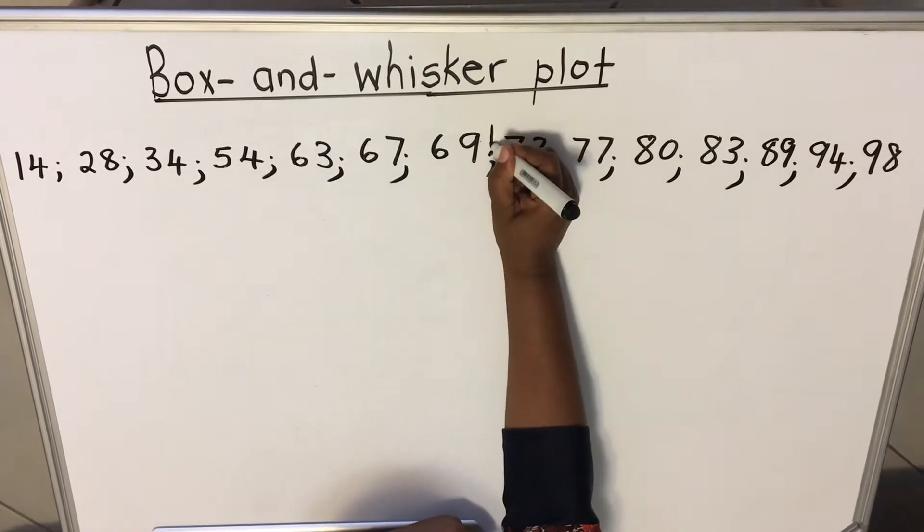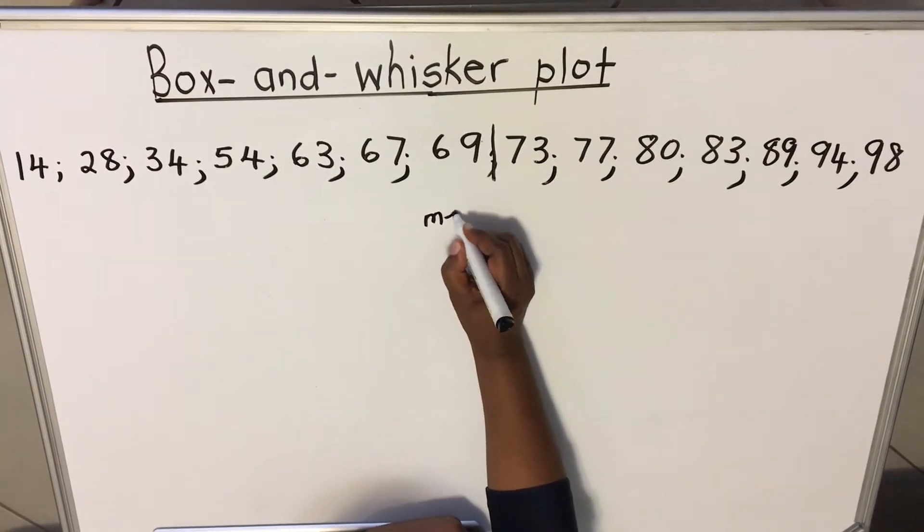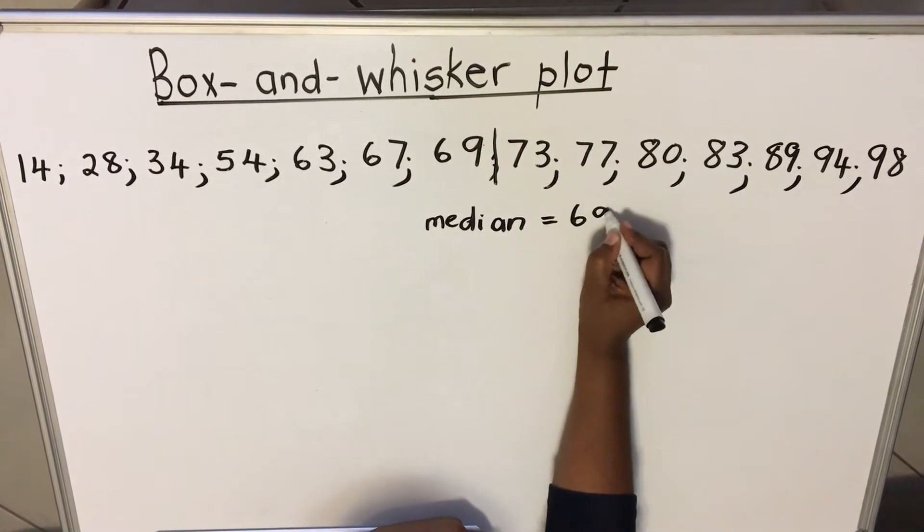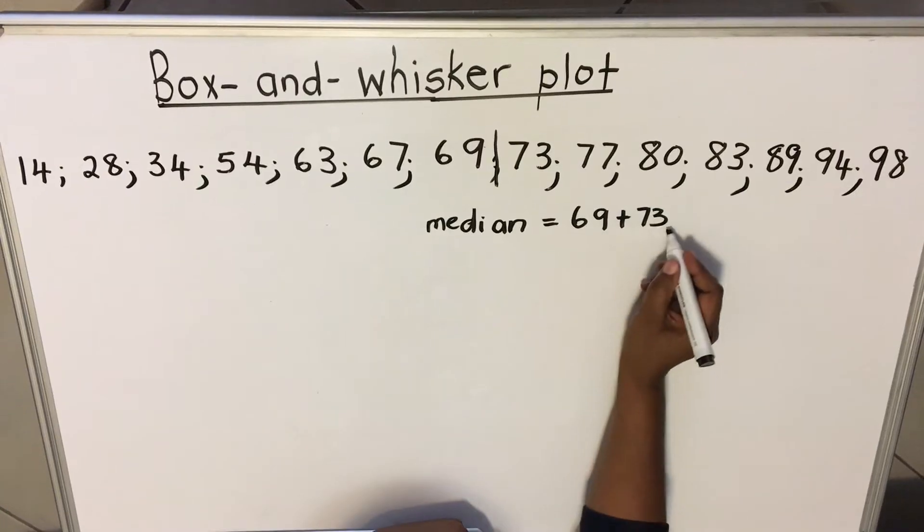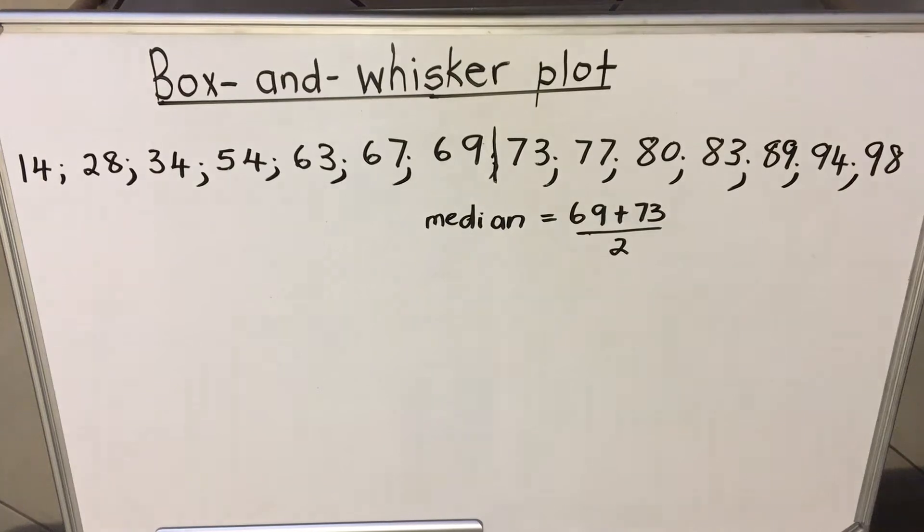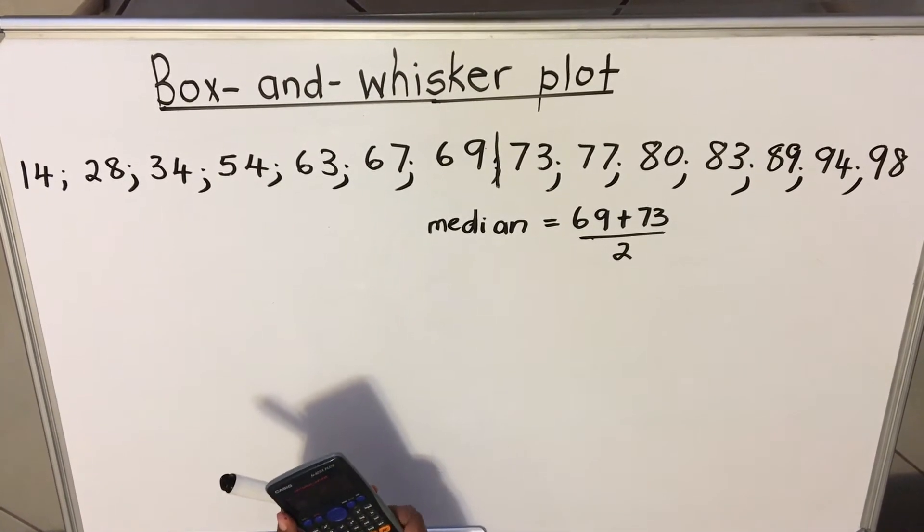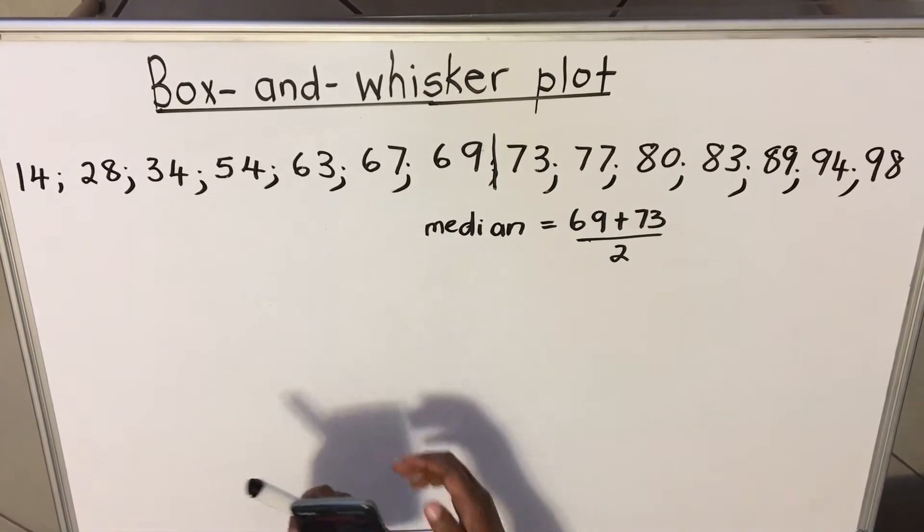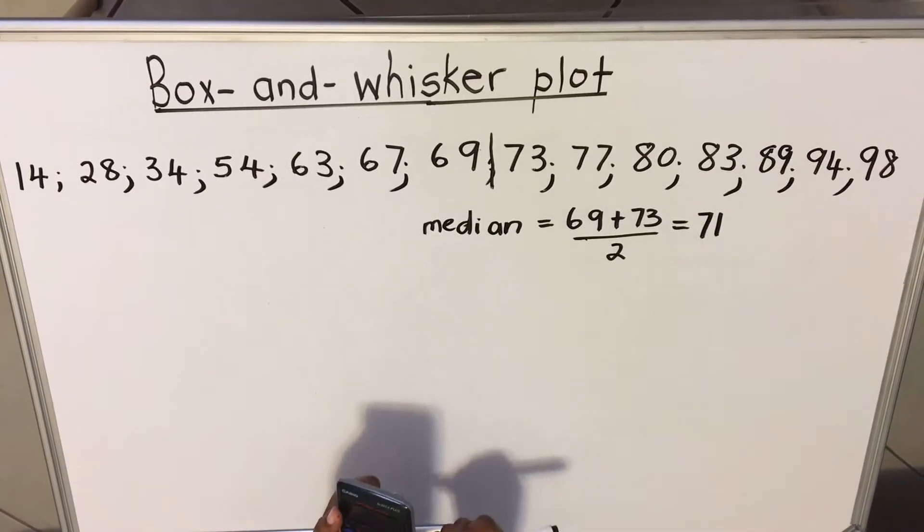So it means your median, the middle, will be a number between 69 and 73. So you're going to add 69 and 73 and divide it by 2. Something very important when we are using especially a scientific calculator: you have to say 69 plus 73 and then equals, then you divide it by 2 and then you get 71. If you don't do that, it will divide the 73 only, then add it to the 69, according to BODMAS.